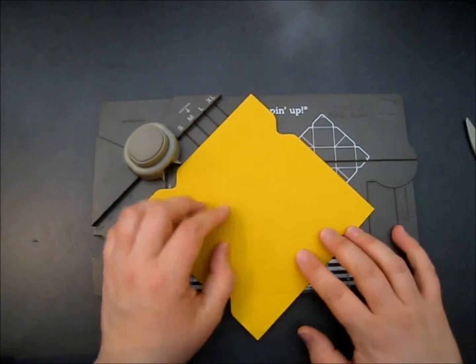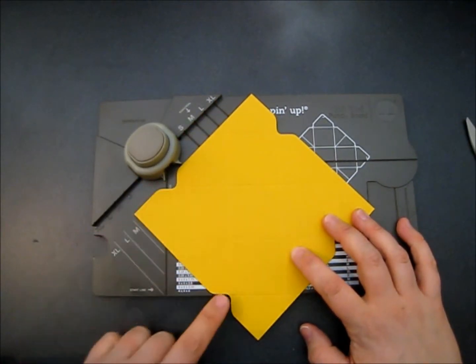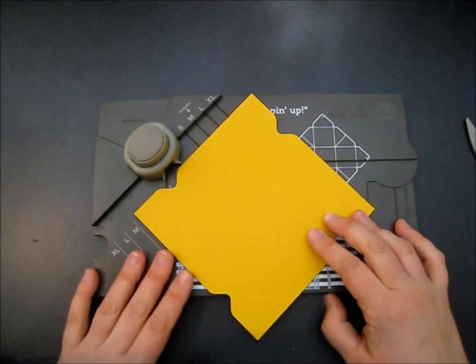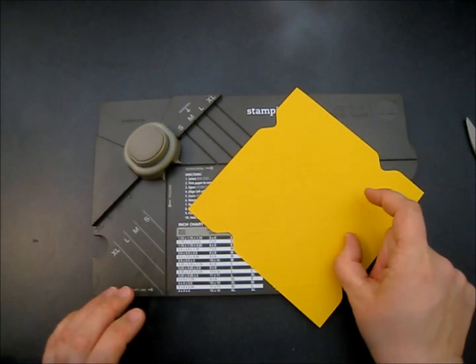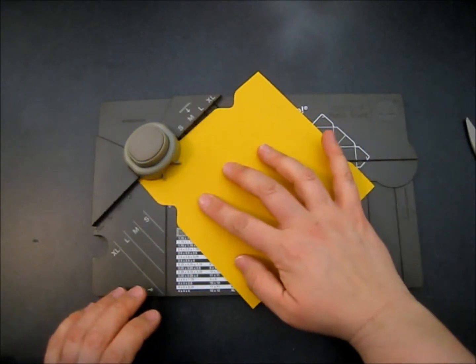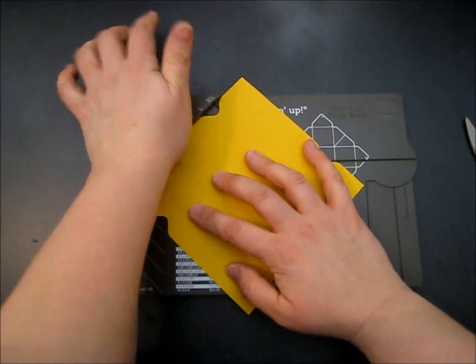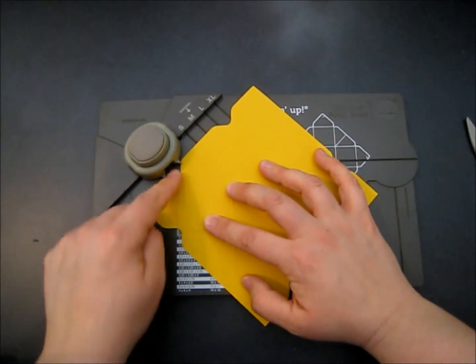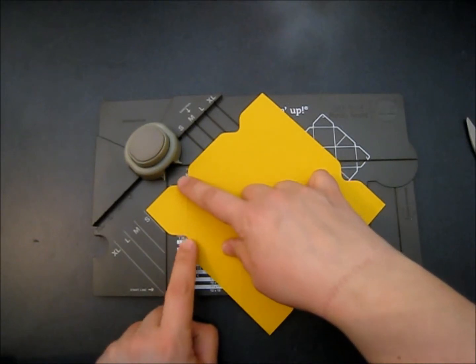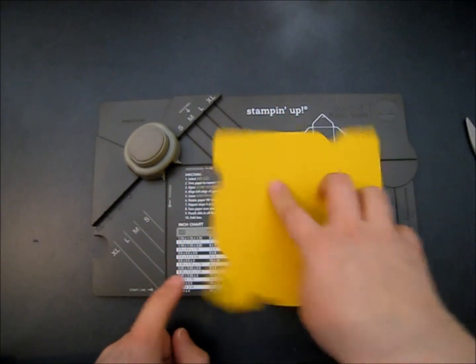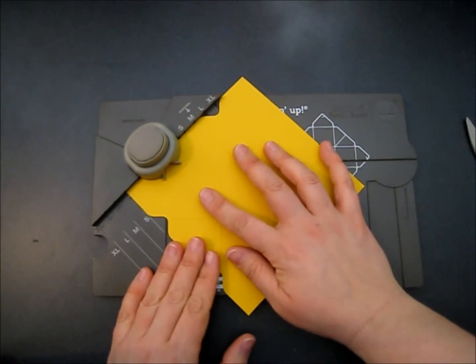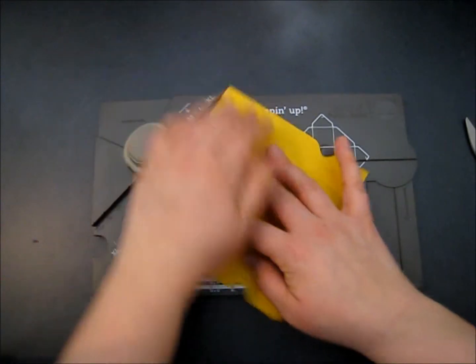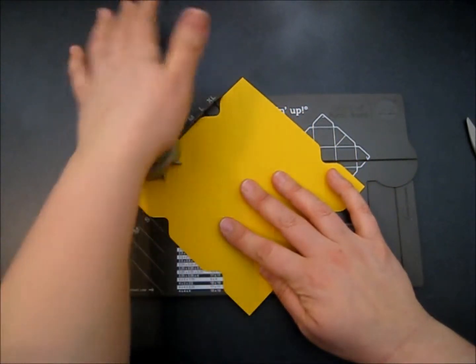So now you'll see on here we've got divots on one side of our corners. So what you're going to want to do is flip it over and line it up with that small line again. So this is going to give you the divots on both sides. So see we've got two here. We've only got one here. So you're going to turn, line it up with the small again and do that all the way around.